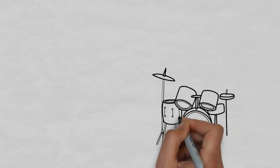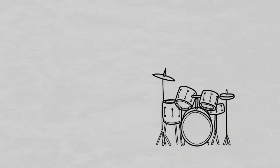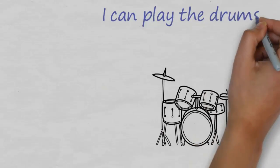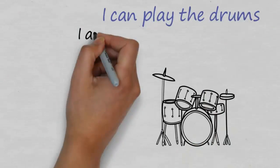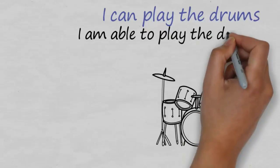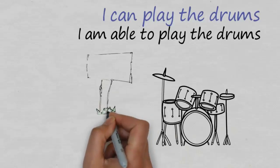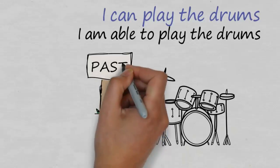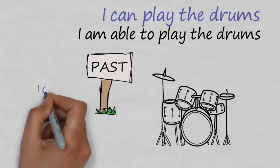Now let's consider how we might use this with a real situation. Playing the drums is probably a good example. In terms of the present simple, we can say 'I can play the drums,' or we can use able to: 'I'm able to play the drums.' Both are fine for the present simple, and in fact we often prefer 'I can play the drums' because it's easier to say.